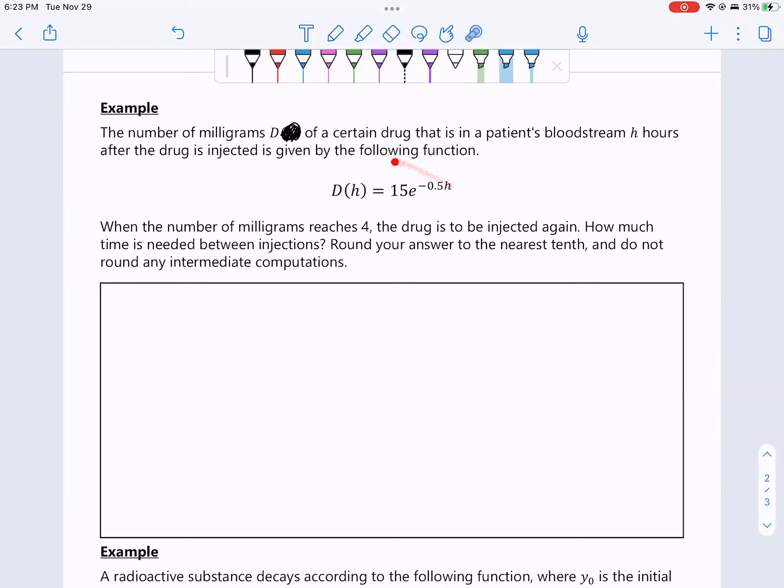This is function notation right here. If it confuses you, you just pretend that's not there. That's just function notation. That's just telling you you're plugging H in. So let's look at it this way. The number of milligrams D of a drug in a patient's bloodstream. So D is the current amount of drug in the bloodstream currently. Well, after H hours.